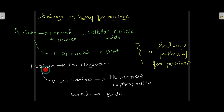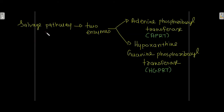You have purines and you convert them into nucleotide triphosphates — that is the salvage pathway for purines. This salvage pathway involves two enzymes: adenine phosphoribosyltransferase and hypoxanthine-guanine phosphoribosyltransferase, abbreviated as APRT and HGPRT respectively. These two enzymes, APRT and HGPRT, are involved in the salvage pathway.